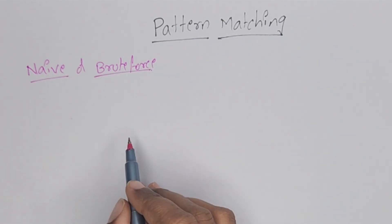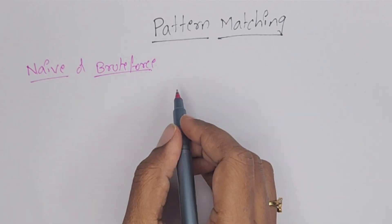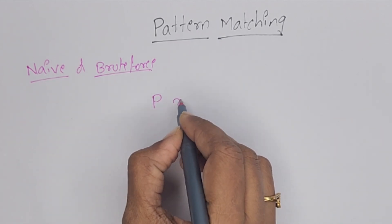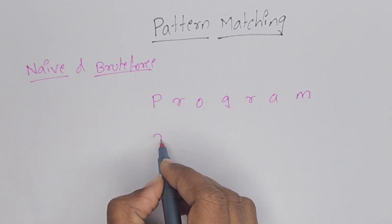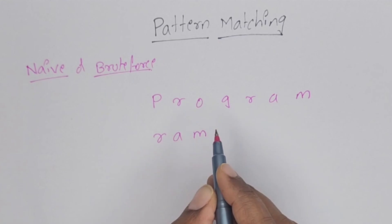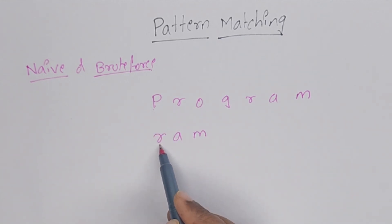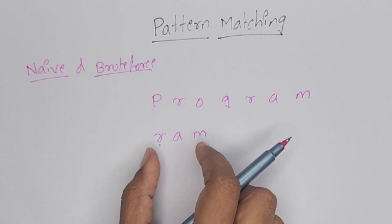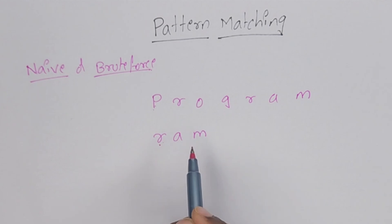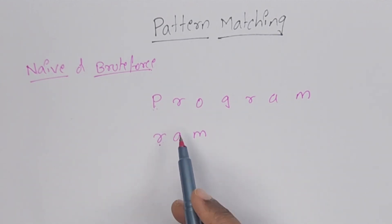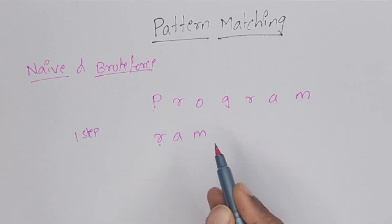I will take one example and show how to find the pattern using this algorithm. For example, the string is 'PROGRAM' and the pattern is 'RAM'. First, we compare the first two characters: P and R — not matching. If these two were matching, we could compare the remaining characters. But since P and R are not matching, the complete pattern will shift one step to the right side.